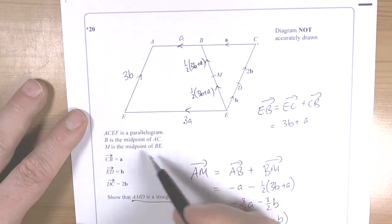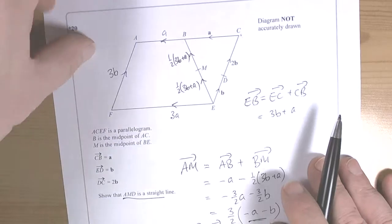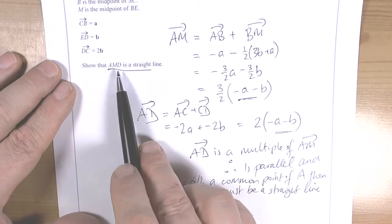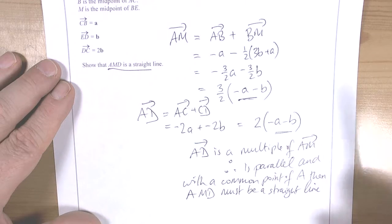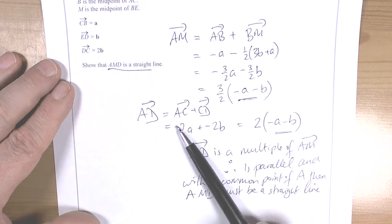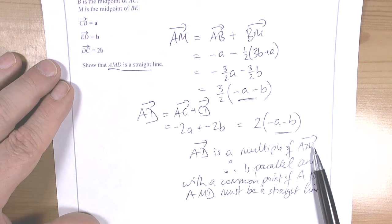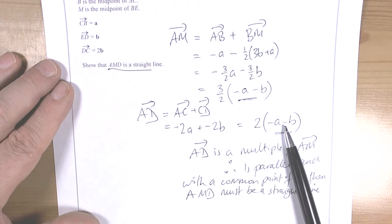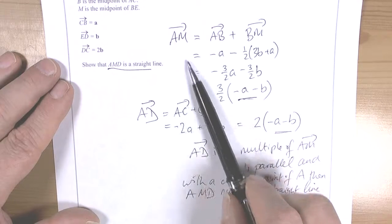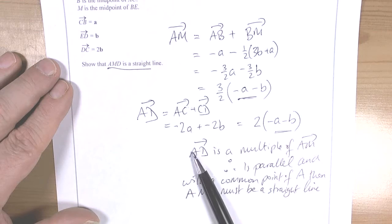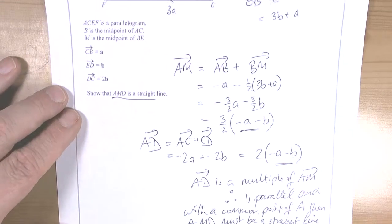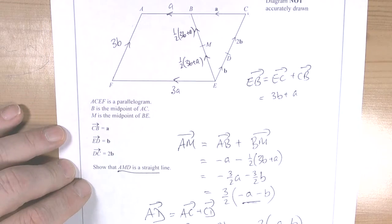Okay, so we filled in the picture with all the vectors we knew. We then worked through what the question wanted. It wanted to prove that AMD is a straight line. So we went through and showed what A to M was. We showed what A to D was, and because A to D was a multiple of AM, so they had the common vector of negative a negative b, then they are parallel. And because they both started at A, then they must also be in a straight line. So that's how we can use vectors to prove whether things are in a straight line.